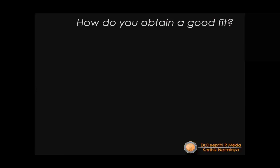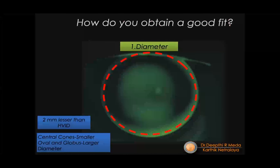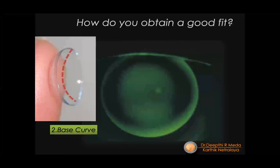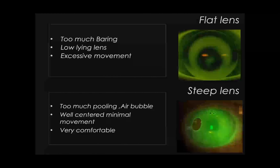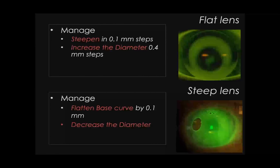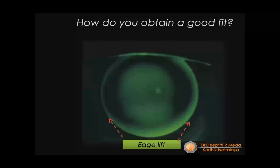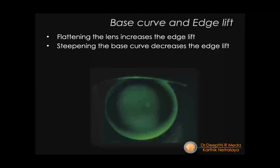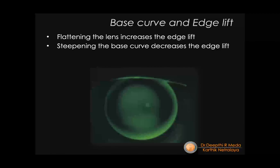Clinical signs indicate whether a lens is steep or flat, and modifications can steepen or flatten accordingly until ideal fit is achieved. After finalizing center fit, evaluate edge lift — ideally 0.2–0.3 mm and uniform. Edge lift can be increased or decreased depending on how tight or loose the fit is. Many customizable Indian and imported manufacturers allow changes to edge lift independently of center fit.